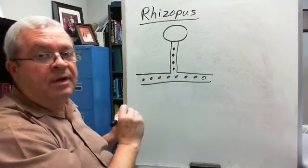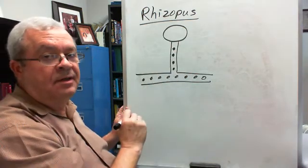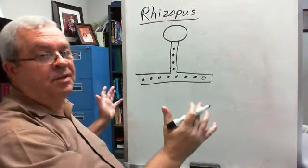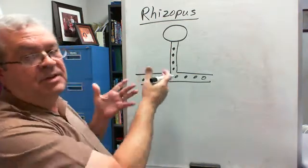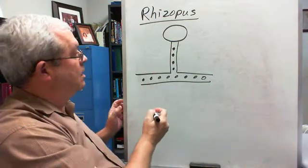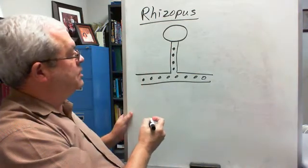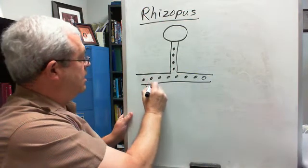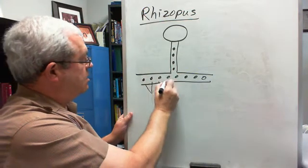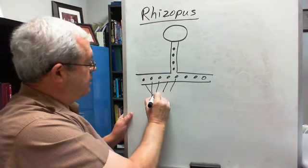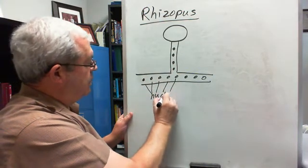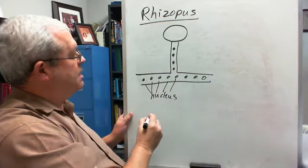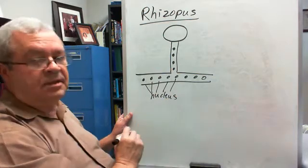Hyphae means threads. Mycelium means you've got a whole bunch of threads. What am I representing inside here? Each one of these represents a nucleus.